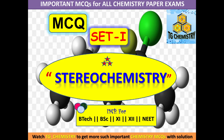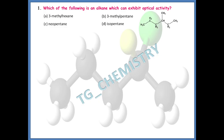Let's see the first question: which of the following is an alkane which can exhibit optical activity? As you can see on the right-hand side there is a structure with the options. The right option should be option A, that is 3-methylhexane.